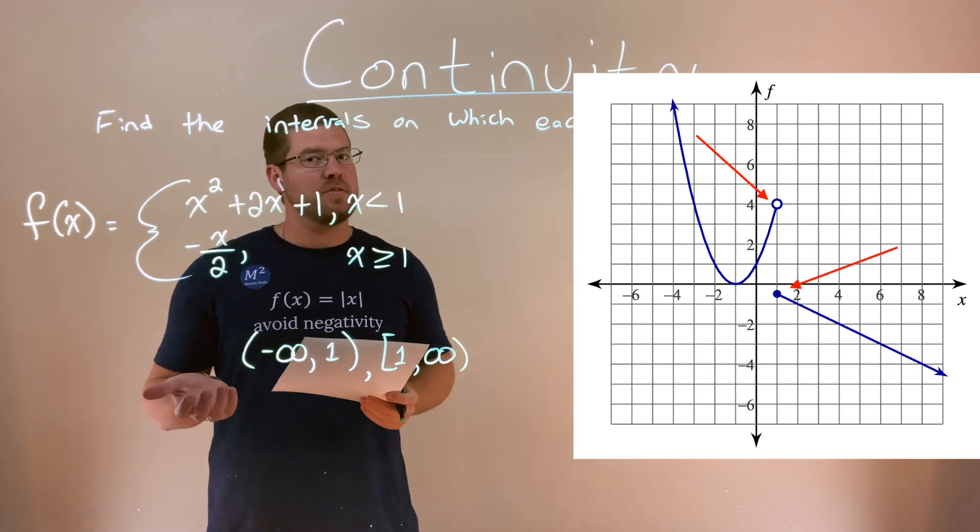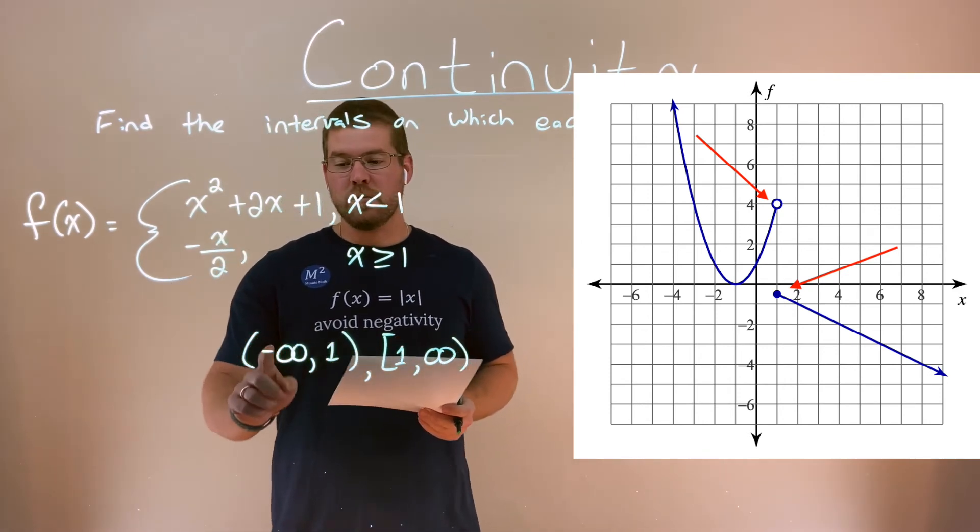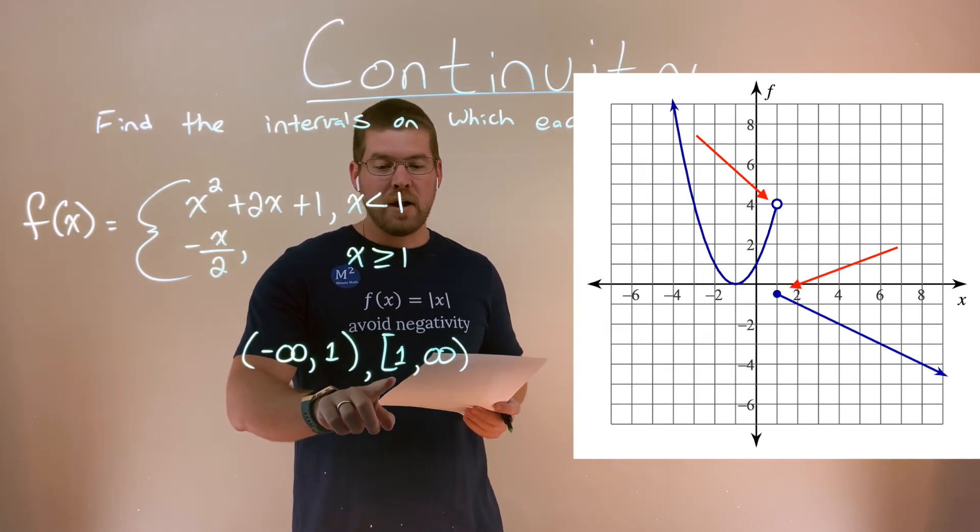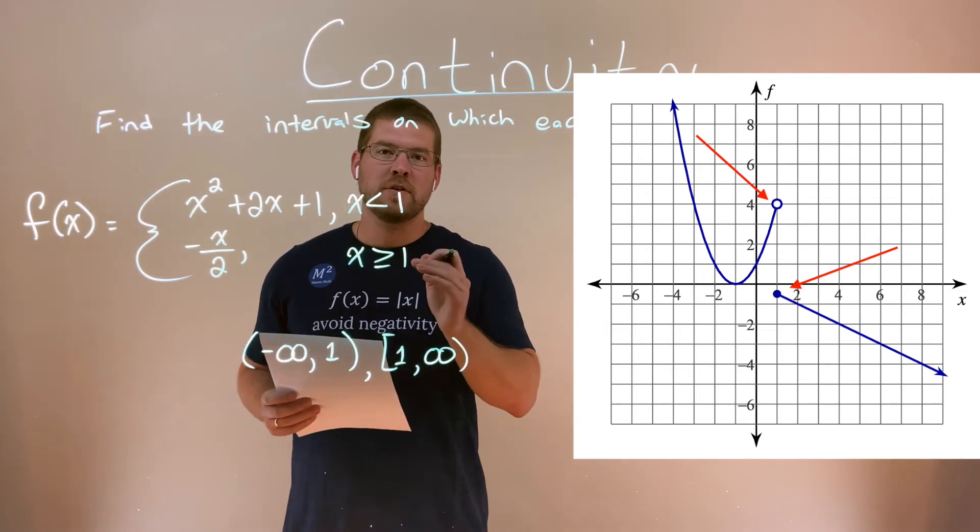So, anyway, our final answer from here is that it is continuous from negative infinity to 1 with the parenthesis there, and then a bracket from 1 to positive infinity.